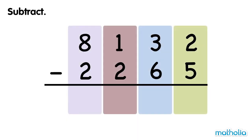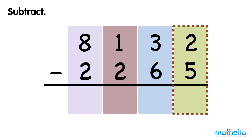Let's find 8,132 minus 2,265. Subtract the ones. We cannot subtract 5 ones from 2 ones, so we regroup 1 ten into 10 ones. Now we have 2 tens and 12 ones. Now we can subtract the ones. 12 ones minus 5 ones equals 7 ones.